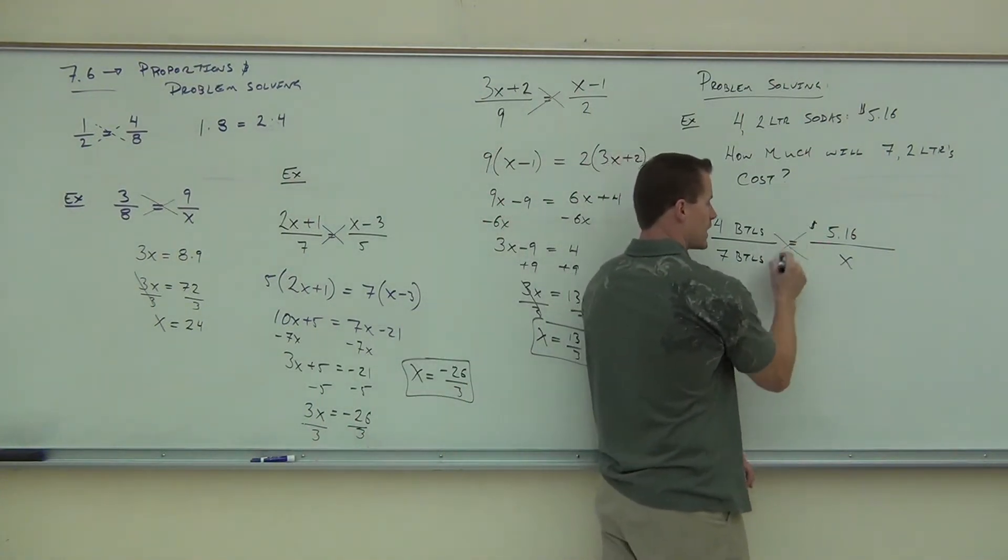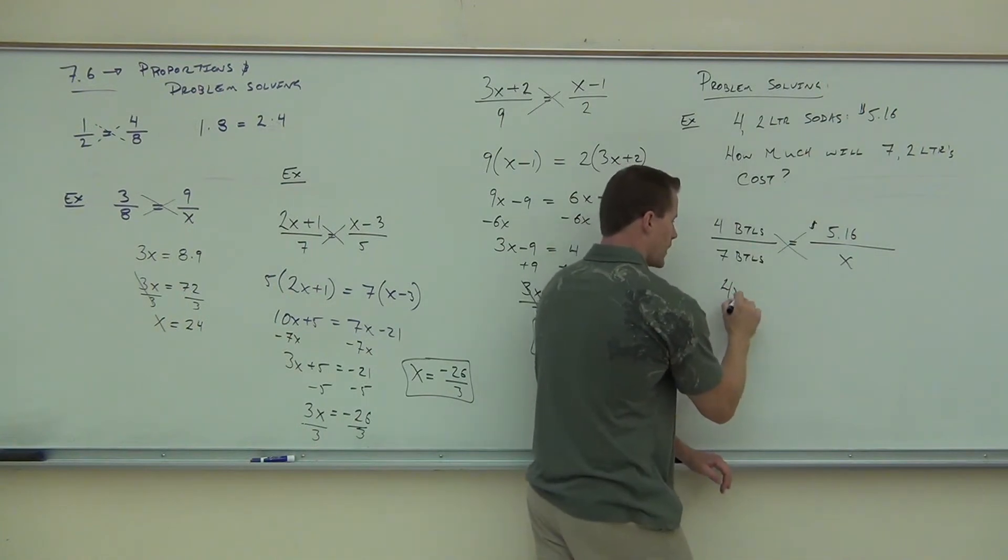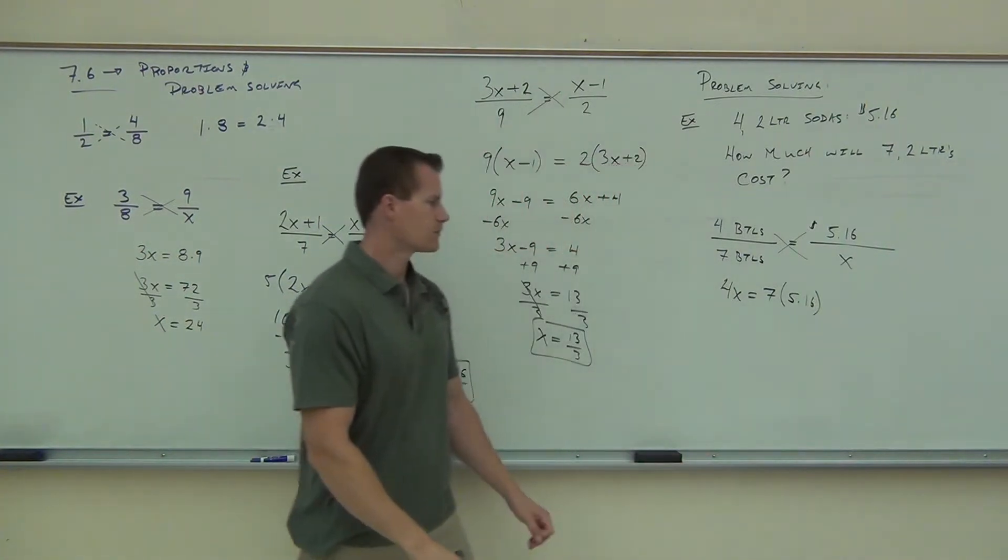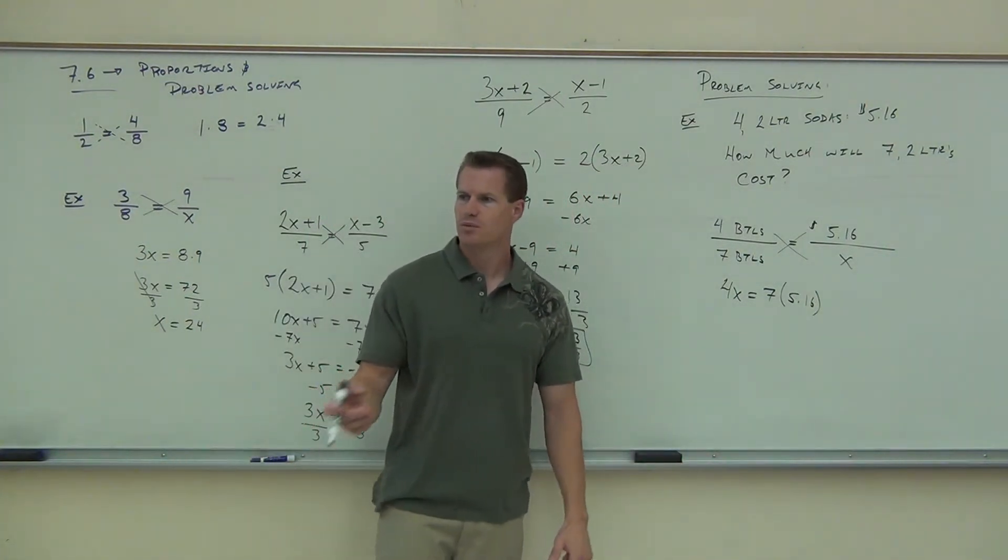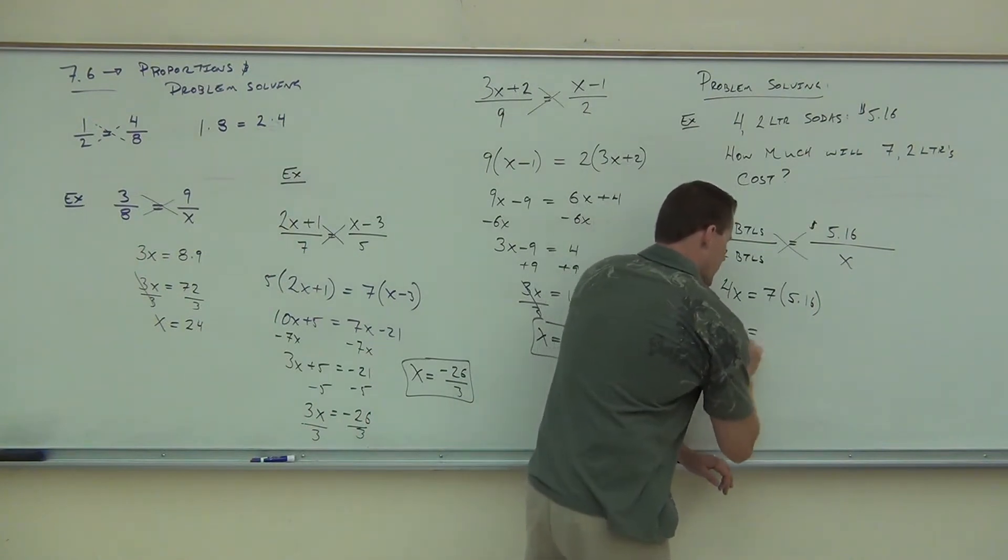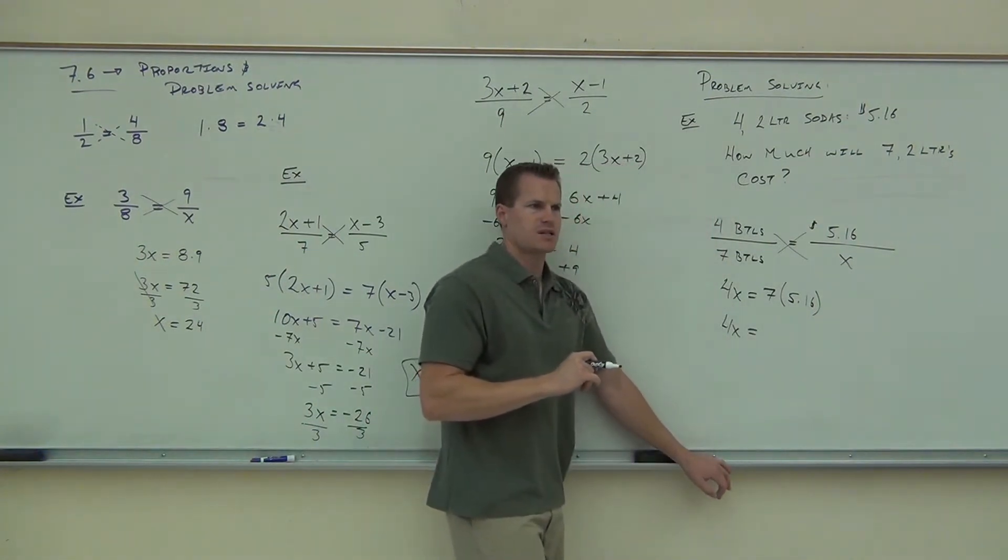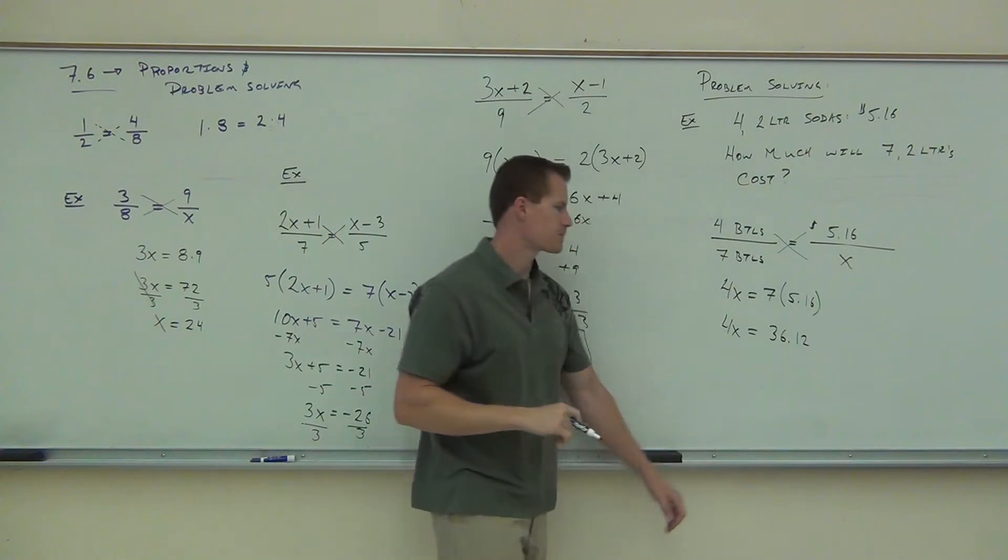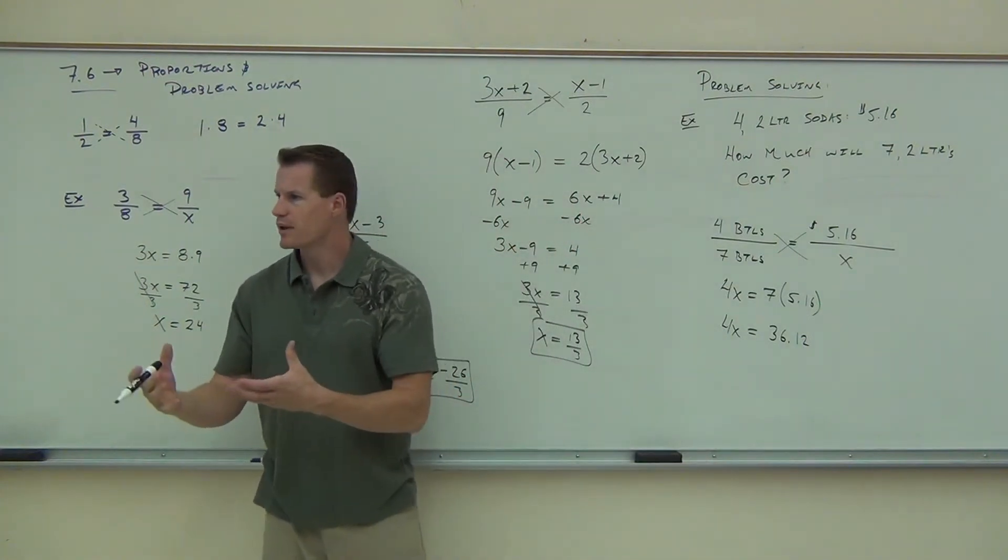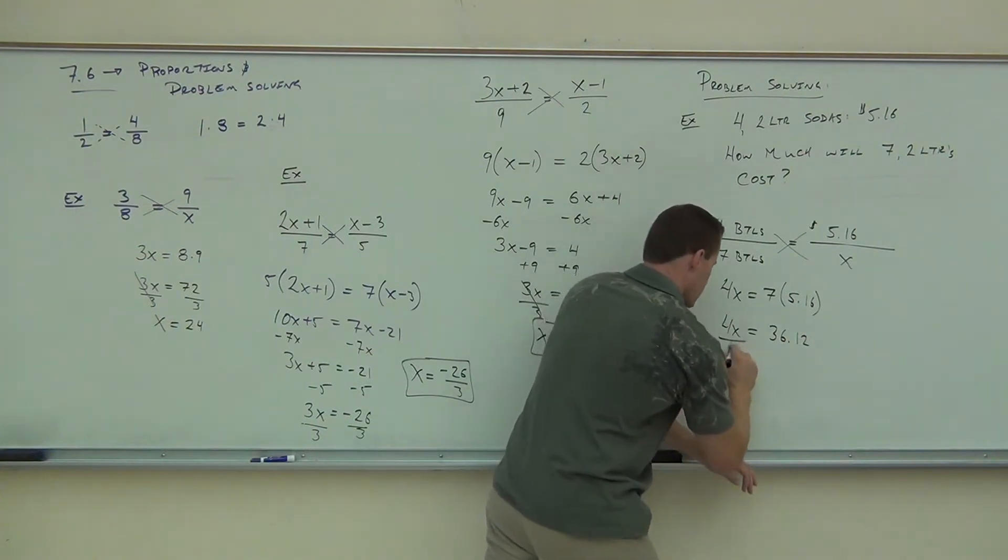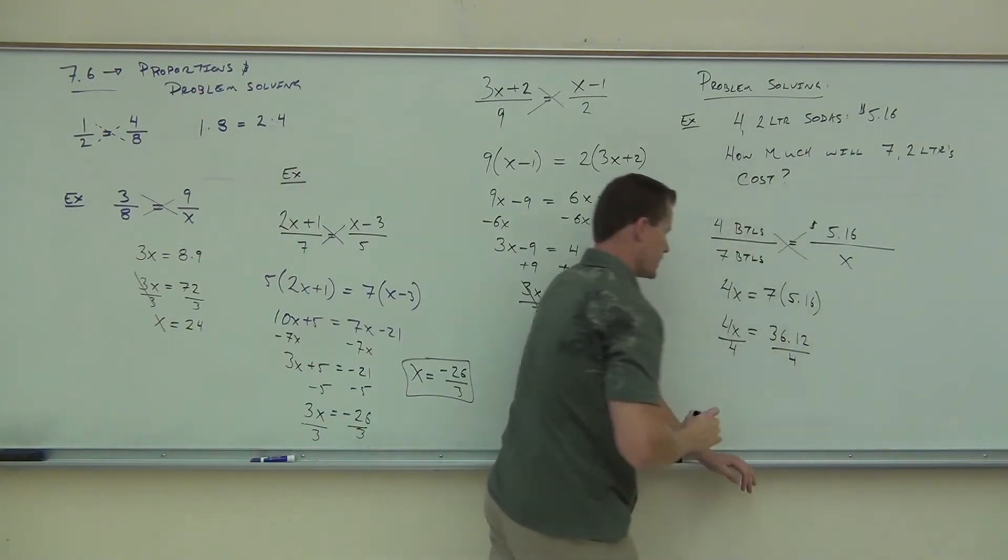Now, because we have a proportion we can cross-multiply, we get 4X equals 7 times 516. If you have a calculator, take that out and multiply 7 times 516 for me. So we multiply, we cross-multiply, we multiply these numbers together. Last step is what? Yeah, if we do that, we're going to get, what, 903?